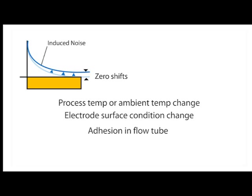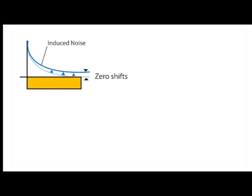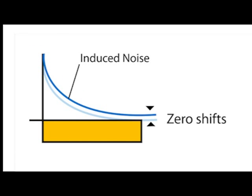This results in zero point shift or fluctuation. Process or ambient temperature changes result in property changes in a process liquid, such as conductivity or permittivity, which varies the magnitude of eddy currents that come into the electrode. Therefore, process ambient temperature change can cause zero shift or fluctuation.